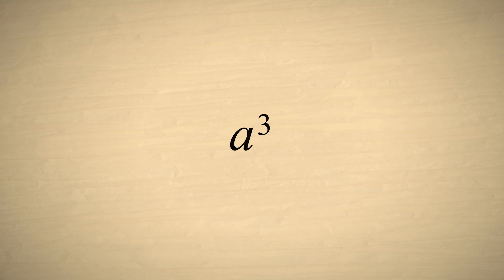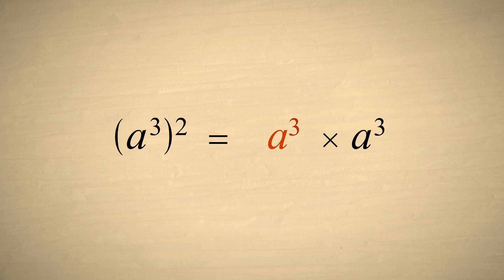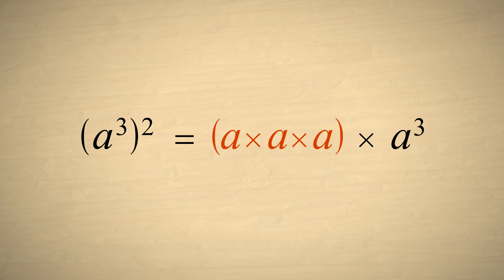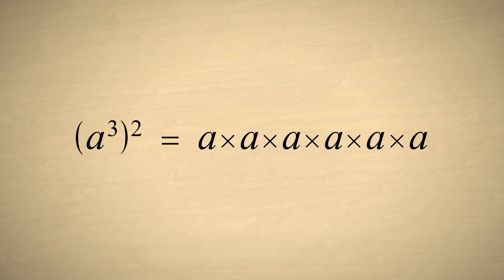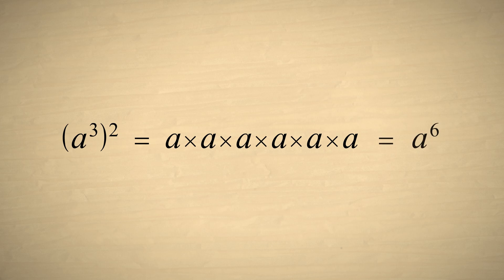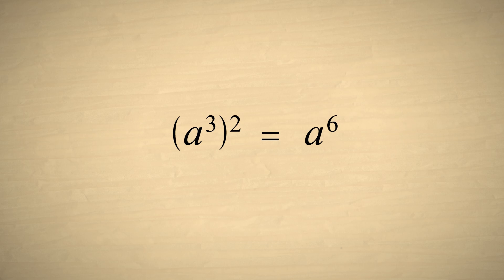For example, let's say we take the expression a cubed and square it. This is equivalent to two copies of a cubed multiplied together, which is a times a times a times a times a times a. Of course, six a's multiplied together is a to the sixth power. Notice that the exponent of a times the power this expression was raised to equals the exponent of the result.